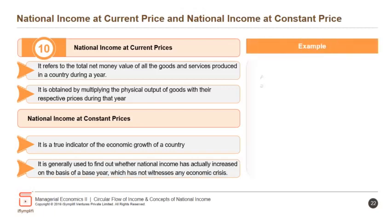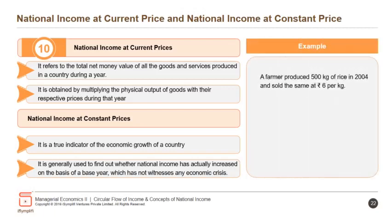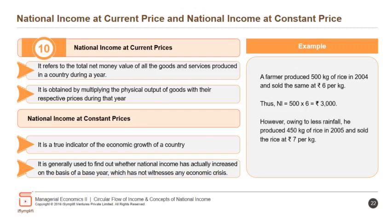For example, a farmer produced 500 kgs of rice in 2004 and sold it at Rs. 6 per kg. Thus, NI = 500 × 6 = Rs. 3,000. However, owing to less rainfall, he produced 450 kgs of rice in 2005 and sold it at Rs. 7 per kg. Now, NI = 450 × 7 = Rs. 3,150.